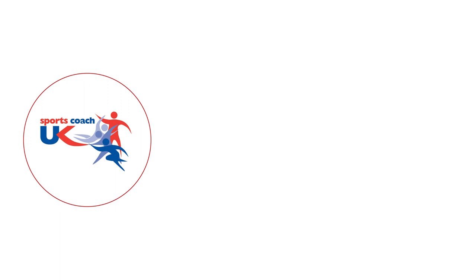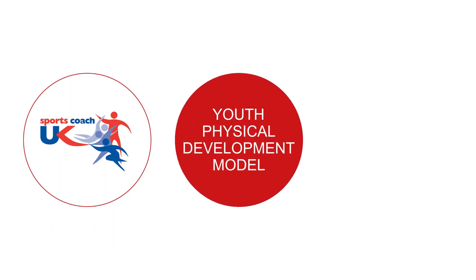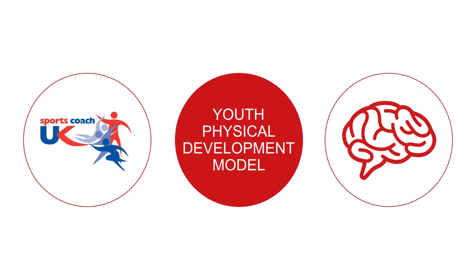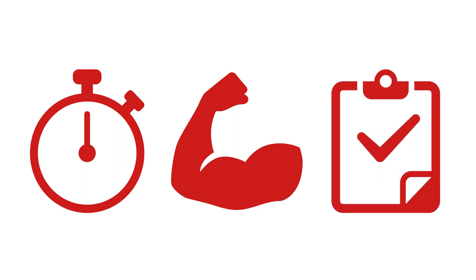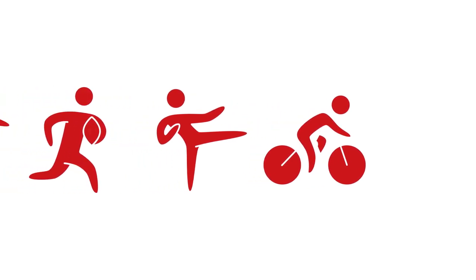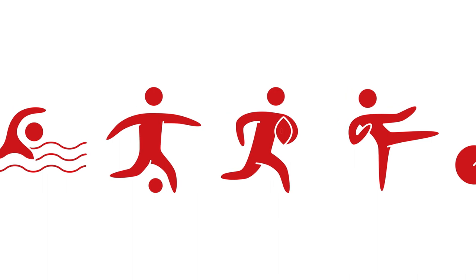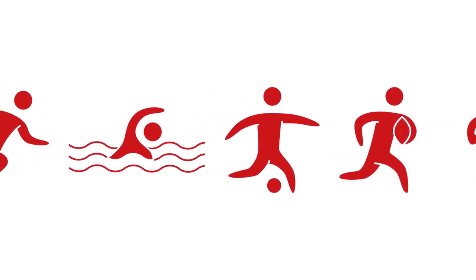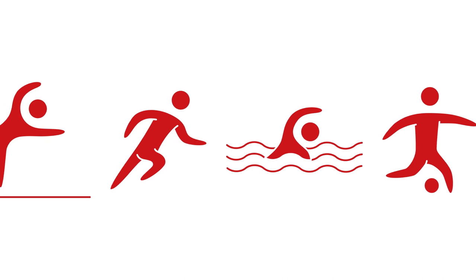Recently, Sports Coach UK have been looking at new research and models developed from the principles laid out in previous models. The youth physical development model has built extensively on previous thinking. It suggests that certain types of training, like strength, should be a crucial part of a child's athletic development from the outset. The work of world-leading experts, doctors Rhodri Lloyd and John Oliver of Cardiff Metropolitan University, is based on evidence that young athletes of both genders respond to training throughout childhood and adolescence, and it's been designed to show how coaches can make a real difference at every stage of development.